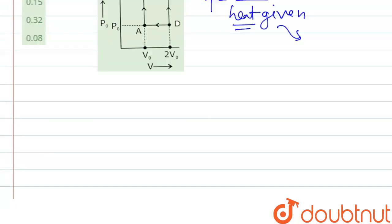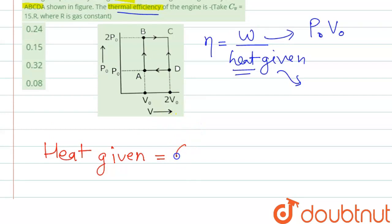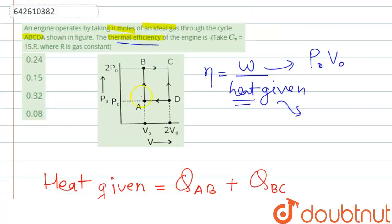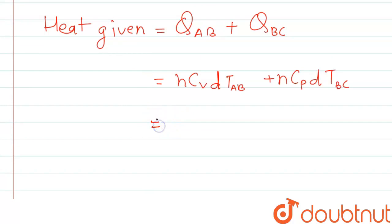If we see the case, the heat given is equal to Q_AB plus Q_BC. Now we can write this as nC_v dT_AB plus nC_p dT_BC. From A to B the volume is constant, where from B to C the pressure is constant. That's why here C_v and here C_p. The value of C is given 15R.